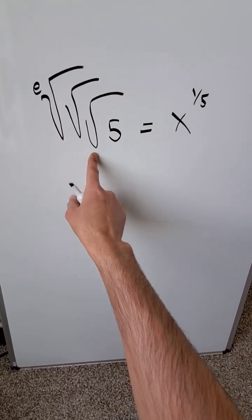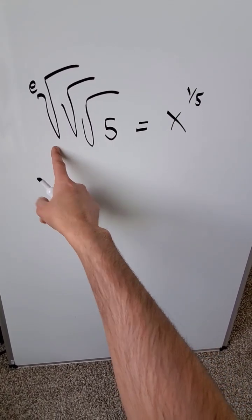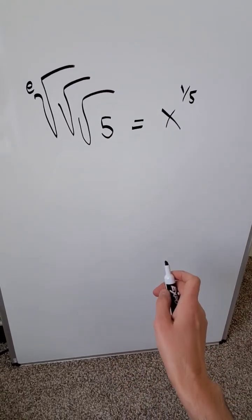I have the e root of the root of the root of 5. These are square roots. Here's an e root equals x to the power of 1 over 5.